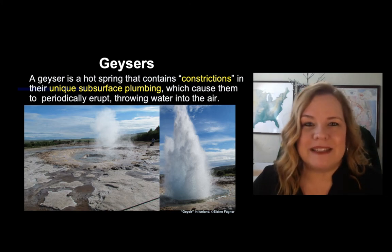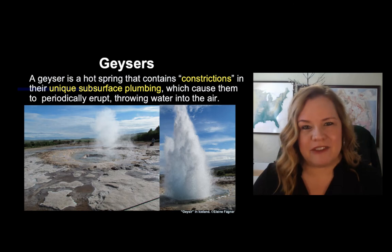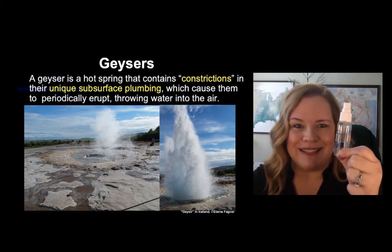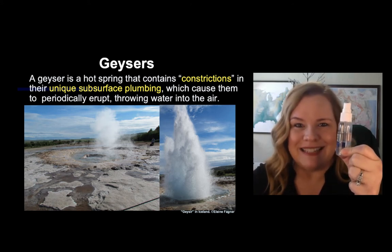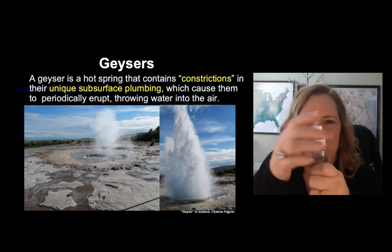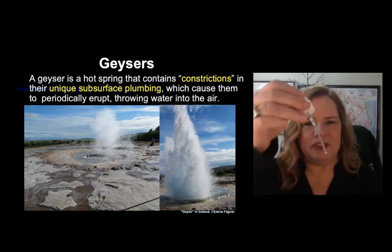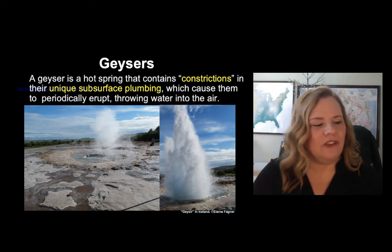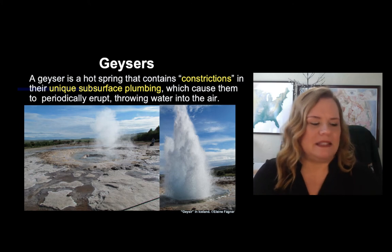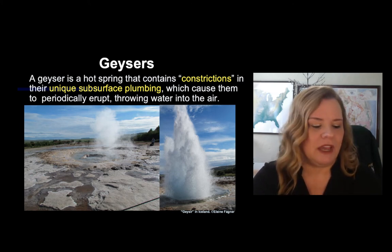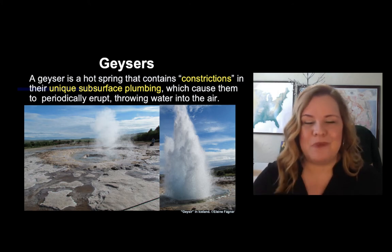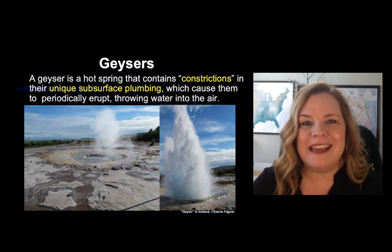The first requirement is that a geyser must have a constriction inside its plumbing. I'm holding up a bottle of glass cleaner to demonstrate — you need a constriction. This is the interior of a geyser, and this is the constricting point. That constriction doesn't happen by accident.